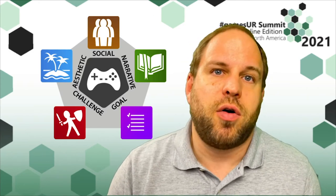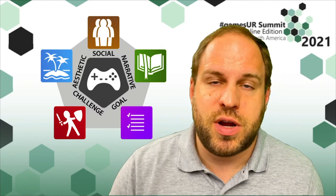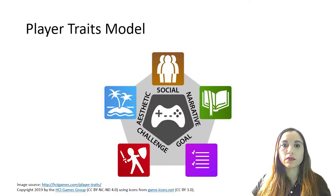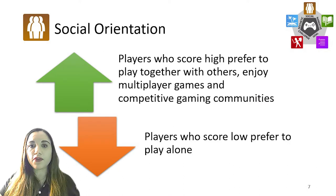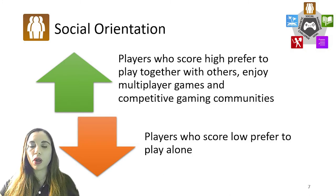Our hope is to improve understanding for personalization of player traits within different game contexts. BrainHex was an interim model that provided the grounds to develop a definitive player traits model. Based on that research, our work presents a validated scale recognizing that players' preferences are not always explained by simple categorization, but are composed of a combination of different characteristics and traits. The first player trait relates to social orientation — players who score high prefer to play together with others, enjoy multiplayer games, and competitive gaming communities, while players who score low prefer to play alone.